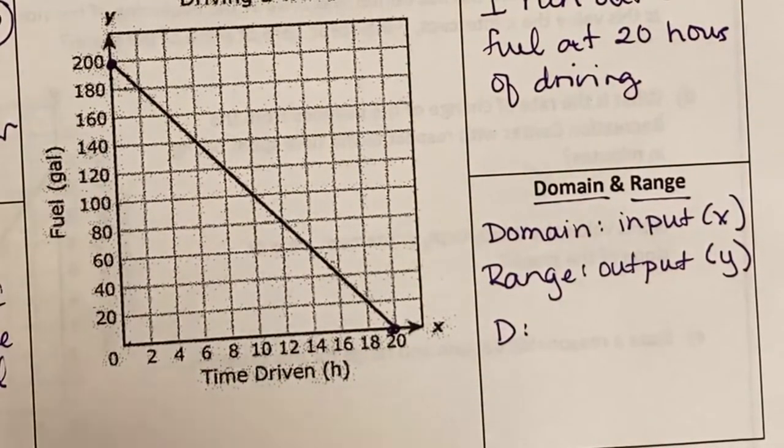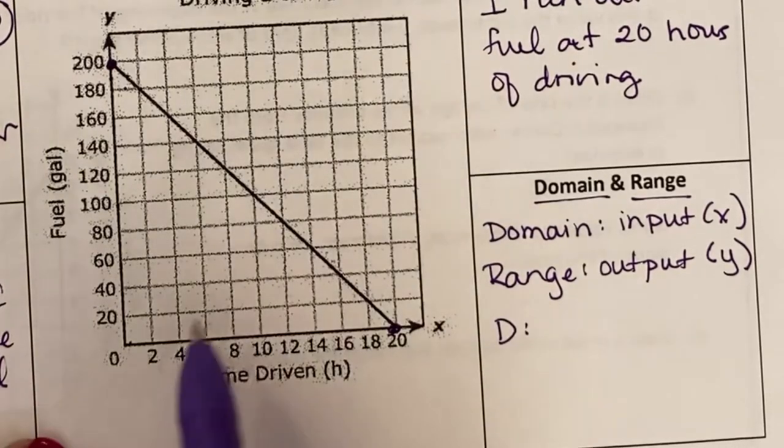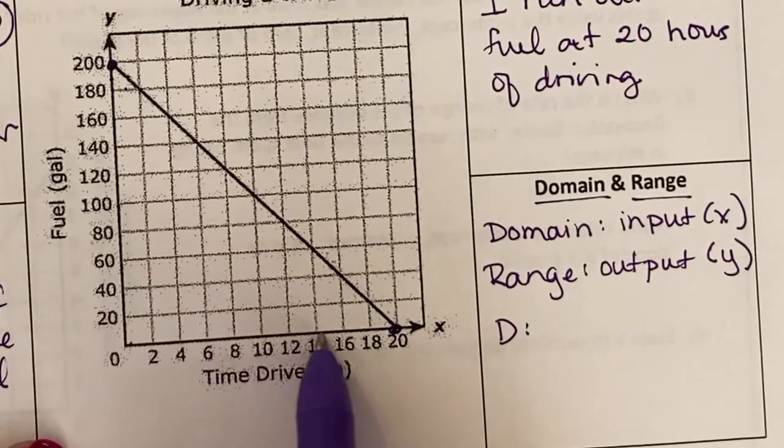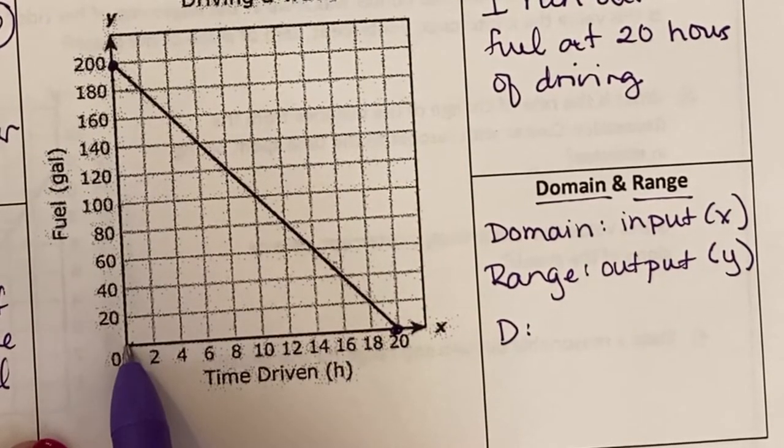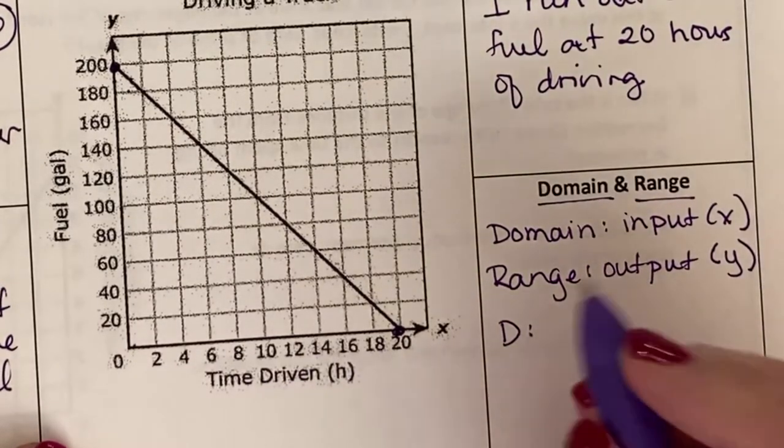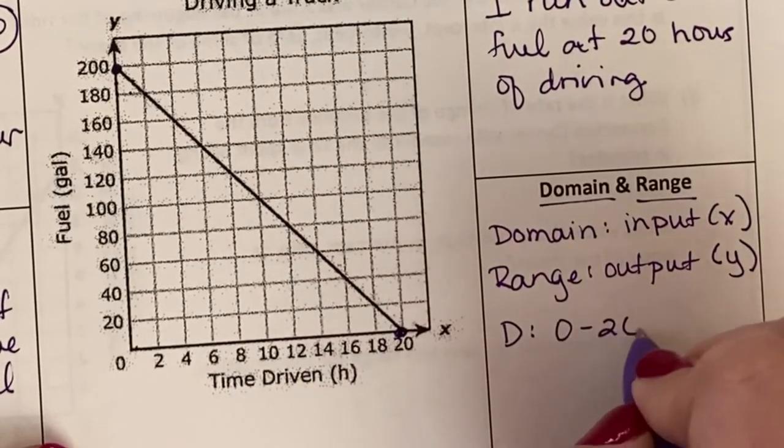So for my domain, which I'm just going to abbreviate d, what are all of the possible x-values that I could get? I could go from 0 all the way to 20, so 0 to 20.